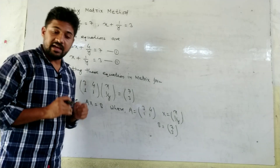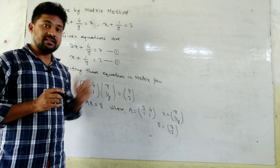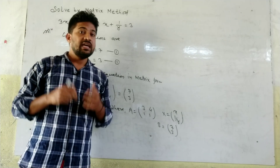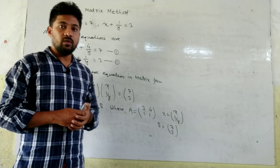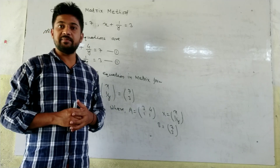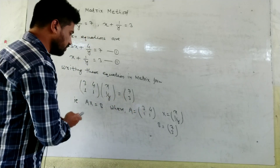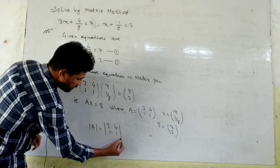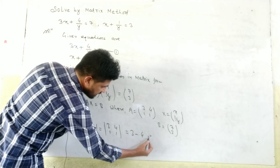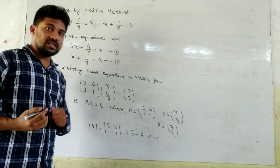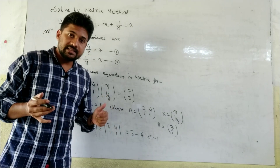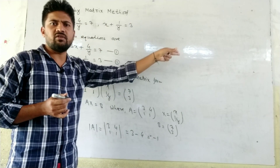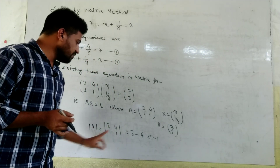After writing A·X = B, we need to find the determinant of A to check whether the matrix is singular or non-singular. Singular matrix means determinant equals 0; non-singular means determinant is not equal to 0. Only if A is non-singular can we find the values of x and y. The determinant of A is 3×1 minus 1×4, which equals 3 minus 4 = minus 1. Since it is not 0, A is non-singular.